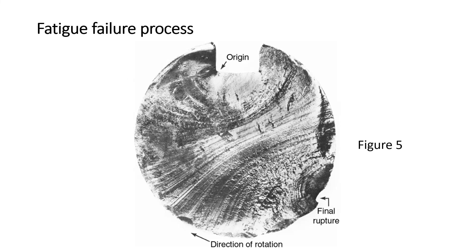Both features indicate the position of the crack tip at some point in time. They appear as concentric ridges that expand away from the crack initiation site, frequently in a circular or semicircular pattern. Beach marks are of macroscopic dimensions and may be observed with the naked eye, while fatigue striations are microscopic in size and require observation with an electron microscope.